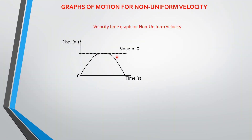This graph is for non-uniform velocity. For you to get velocity as a slope, it means you are plotting displacement against time. You know that velocity equals displacement over time. This graph is for non-uniform velocity — please take notes, as these are the graphs they bring in exams.